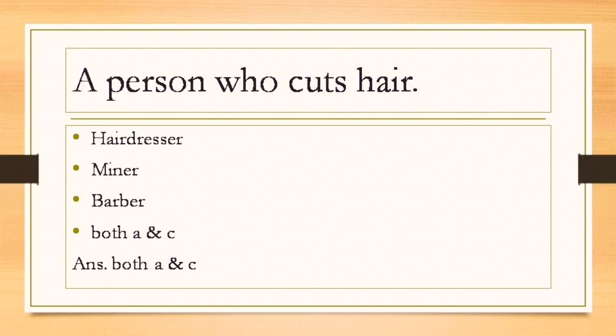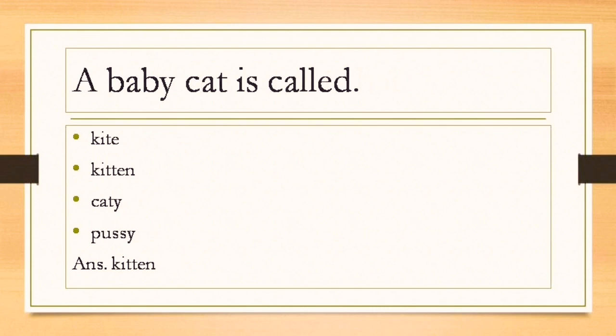A person who cuts hair is called hairdresser as well as barber. So both A and C is the correct answer. Option B is the correct answer. Baby cat is called what? Baby cat is called kitten. So option B is the answer.